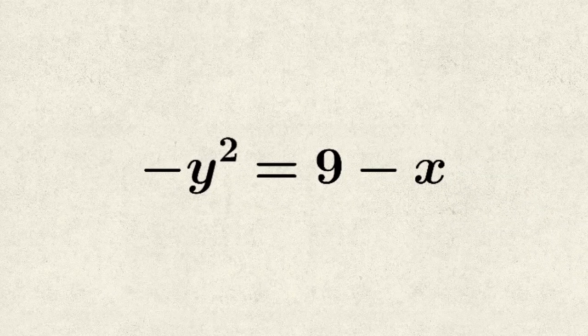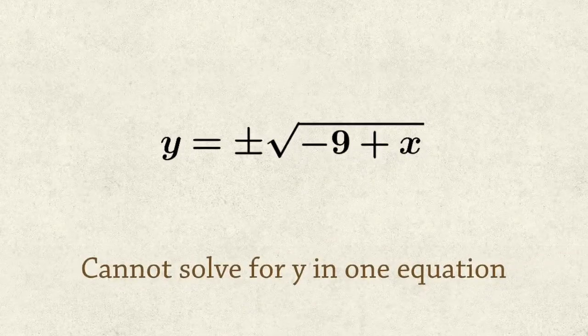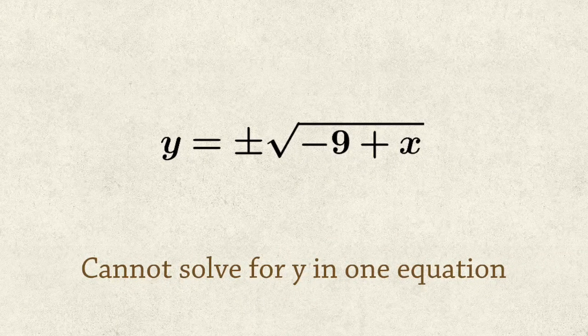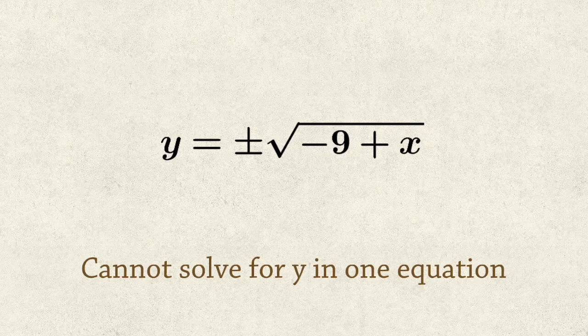We continue to solve for y, and we end up here. y equals the positive negative square root of negative 9 plus x. This actually represents two separate equations with one line. Thus, the original equation did not represent y as a function of x.